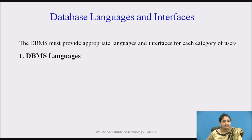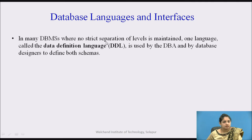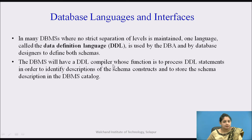A database must provide appropriate languages and interfaces for each category of users. Once the design of the DBMS is completed and the DBMS is used to implement the database, the first step is to specify conceptual and internal schemas and the mapping between them. In many DBMSs where no strict separation of levels is maintained, one language called the Data Definition Language, DDL, is used by the DBA — the database administrator — and by data designers to define both schemas. The DBMS will have a DDL compiler whose function is to process DDL statements to identify descriptions of schema constructs and store them in the DBMS catalog.